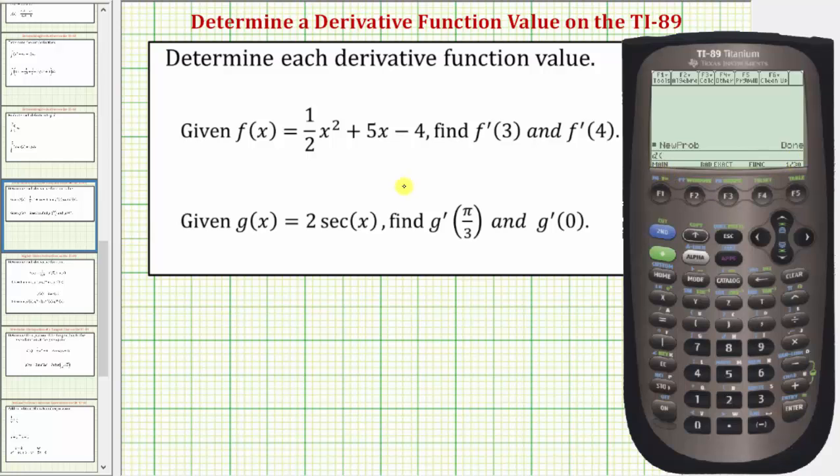Now we enter the function, which is 1 divided by 2, x raised to the power of 2, plus 5x minus 4. Then we enter a comma, the variable x, close parenthesis.